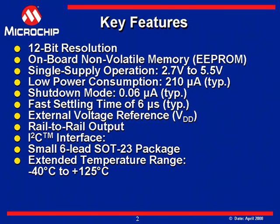The MCP4725 is a 12-bit digital-to-analog converter with integrated EEPROM in a very small package. It operates from a supply voltage of 2.7 volts to 5.5 volts and uses the supply as an external voltage reference. Its onboard precision output amplifier enables rail-to-rail analog output so the entire voltage range can be used.